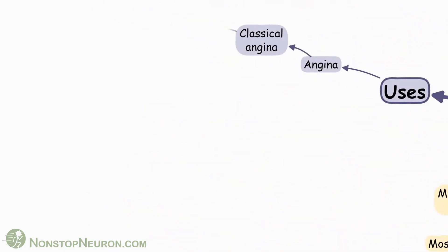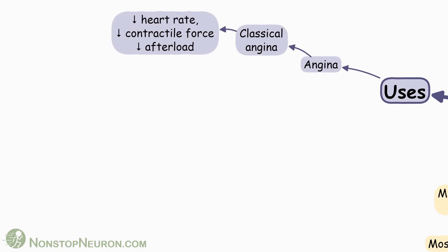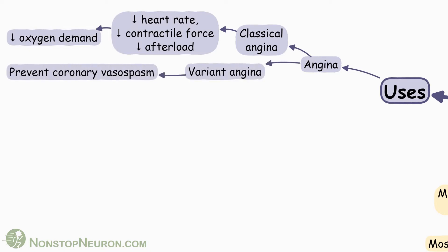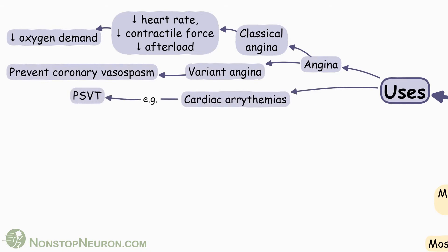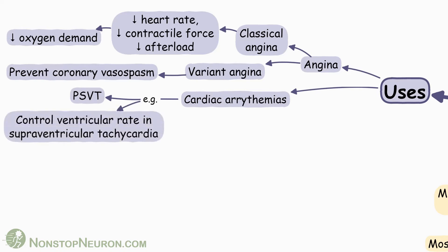Now let's see uses. First, angina. In classical angina, decreased heart rate, force of contraction, and afterload decreases oxygen demand of the heart. In variant angina, prevention of coronary vasospasm provides benefit. Next, cardiac arrhythmia. Calcium channel blockers are helpful in paroxysmal supraventricular tachycardia and to control ventricular rate in supraventricular tachycardia. For this, verapamil and diltiazem are preferred as they produce more cardiac effects.